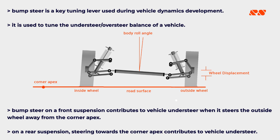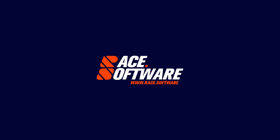Bump steer on a front suspension contributes to vehicle understeer when it steers the outside wheel away from the corner apex. On a rear suspension, steering towards the corner apex contributes to vehicle understeer. Visit www.race.software to learn more.